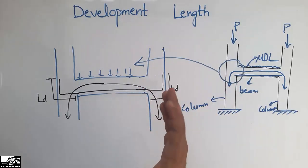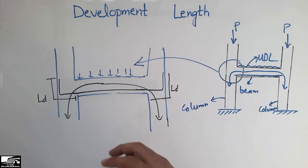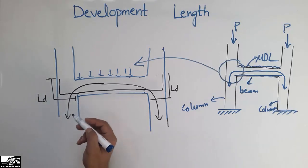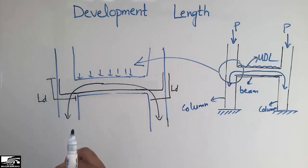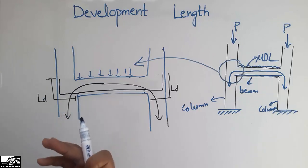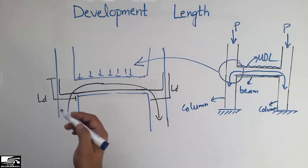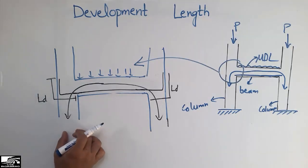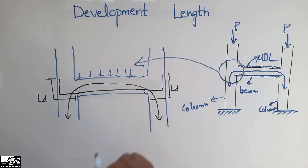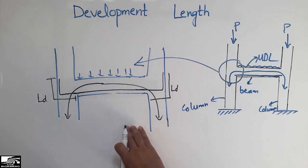The main purpose of the development length is to transfer the load from the beam to the column, or from one structural member to another — whether it is a slab-to-beam or slab-to-column connection. Another purpose is to increase the bond strength between two different materials: the steel bar and the concrete. By increasing the development length, we achieve a good bond between the materials and good load transfer.